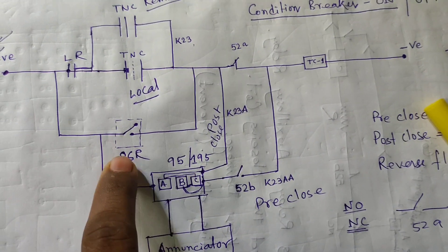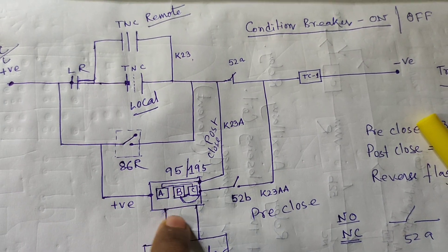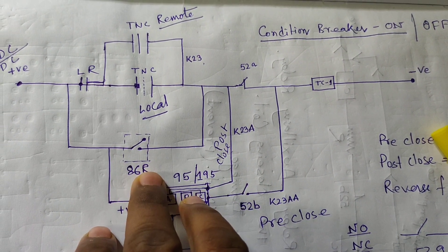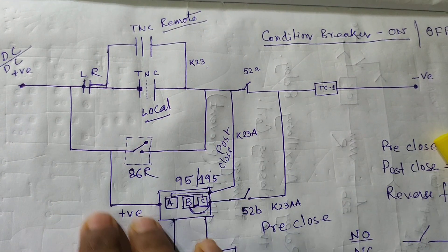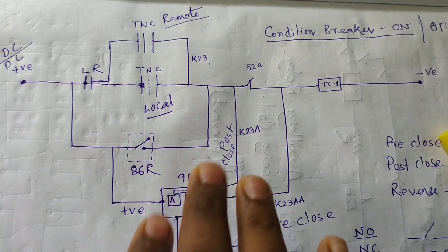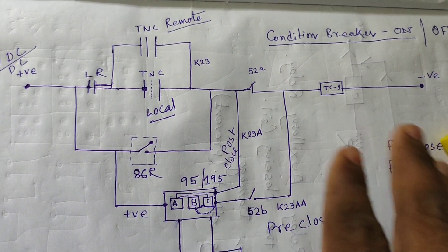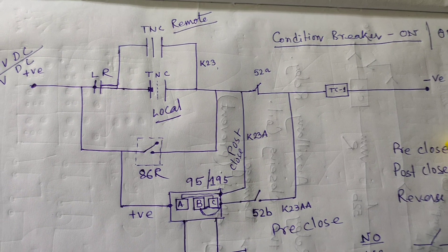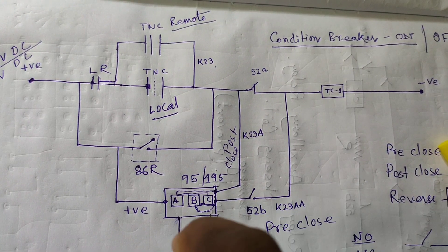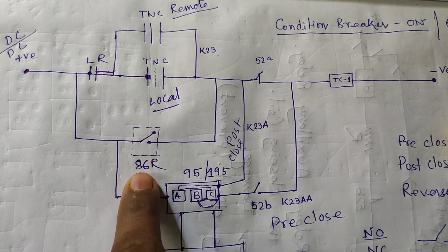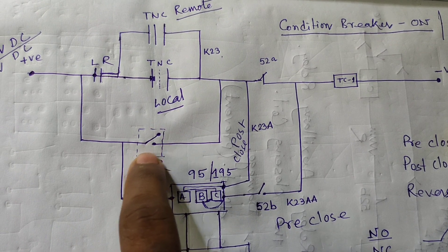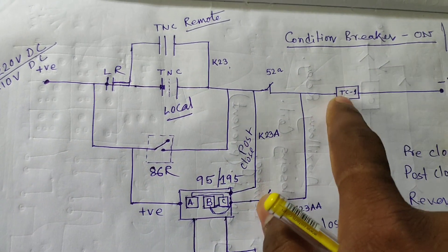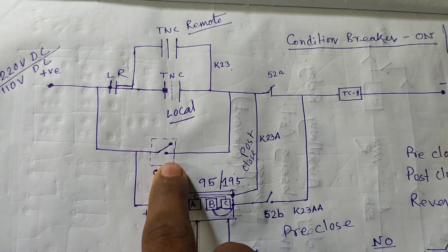The 86R is the master trip relay. All the relays are connected in parallel with the master trip relay. The 86 relay will be operated if the corresponding other relay is energized — that means if a huge amount of current flows through the CT secondary coil connected with the relay, and the current exceeds the set range, the coil contact — NO contact — will become NC, and the direct positive pulse will go through the trip coil and the breaker will be tripped accordingly. This is called the protection trip. This is for the local path, this is for the remote path, and this is for the protection path.